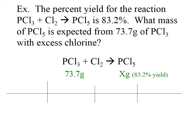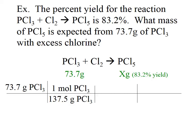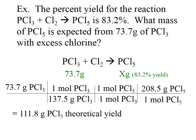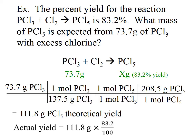We start with our grams of phosphorus trichloride and convert to moles of phosphorus trichloride. Once we convert to moles of phosphorus trichloride, we go to moles of phosphorus pentachloride — there is a 1-to-1 mole ratio between them. Once we have moles of phosphorus pentachloride, we convert to grams by multiplying by its formula mass. Our theoretical yield is 111.8 grams of phosphorus pentachloride. Now we calculate our actual yield, which is 83.2% of 111.8 — that is 111.8 multiplied by 83.2 divided by 100 — giving us 93.0 grams of phosphorus pentachloride.